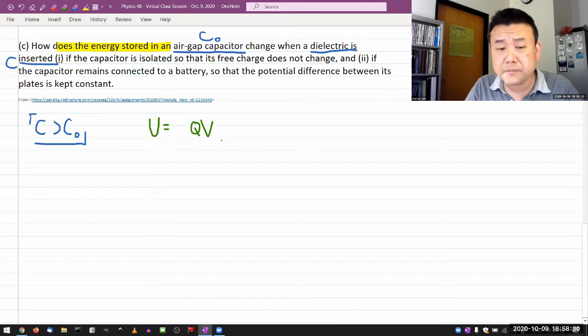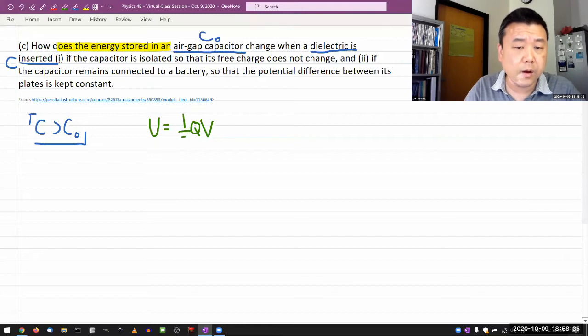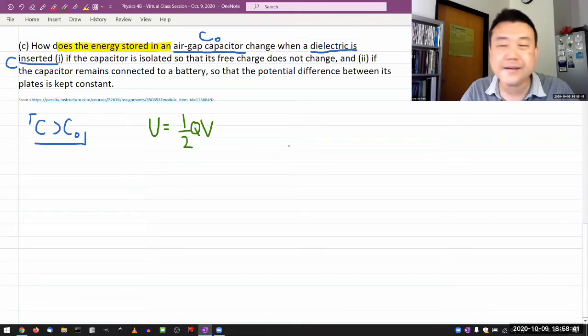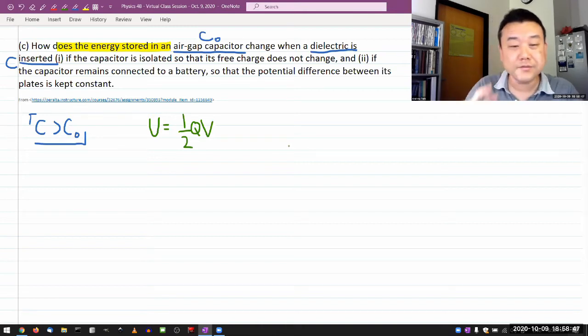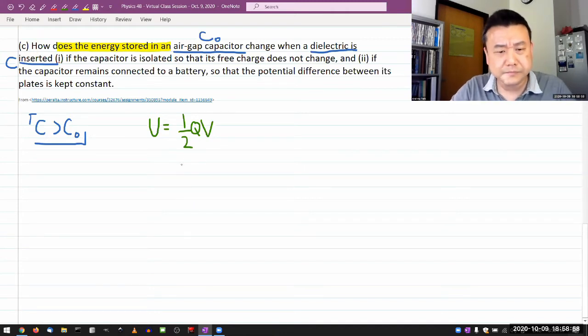Now, there's a bit of a wrinkle here, which I cover in lecture, which is that there is a factor of one-half. You can look at this in two different ways. You can work this out using integral, or you can work this out through a double counting method. Either way, there's a factor of one-half. It doesn't really change the answer here, but there's a factor of one-half.